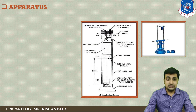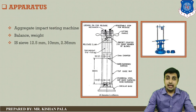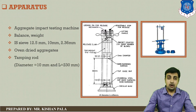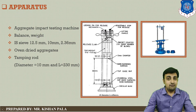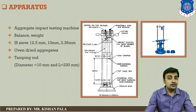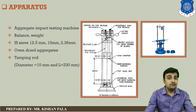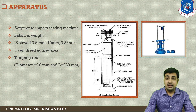If we talk about the apparatus used for determining the aggregate impact value test, you can see on your screen — this is the aggregate impact testing machine. We require a balance and weights for weighing the aggregate sample, and we require Indian Standard sieves of 12.5 mm, 10 mm, and 2.36 mm, because we will use aggregate of size between 10 mm to 12.5 mm. After the procedure, we require the IS 2.36 mm sieve, and we also require oven-dried aggregates.